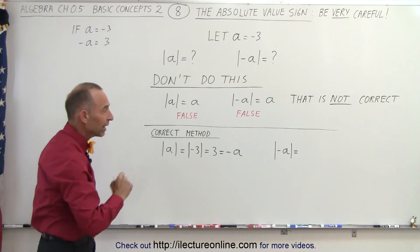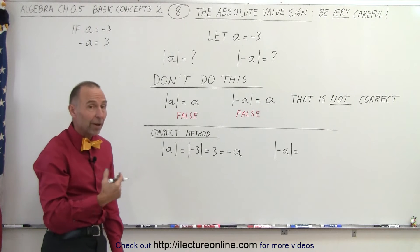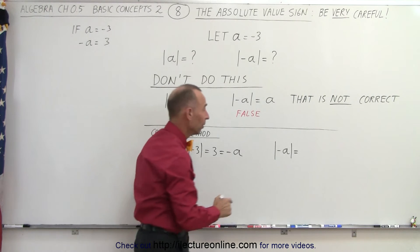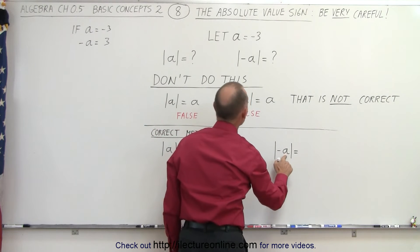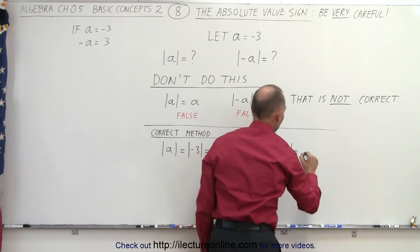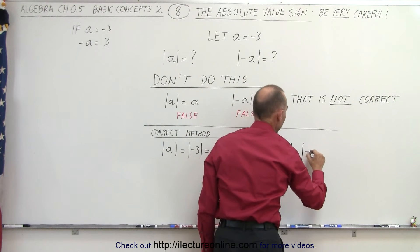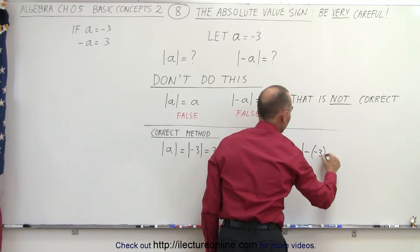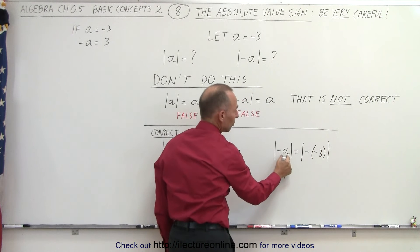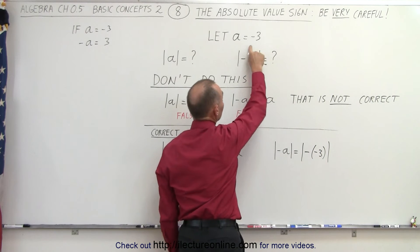What about the absolute value of negative a? Does that mean the result is a positive a? Well, let's find out. First of all, we need to replace a by what a is equal to. So this is equal to the absolute value of the negative of negative 3, because all we did here is replace a by what a is equal to.